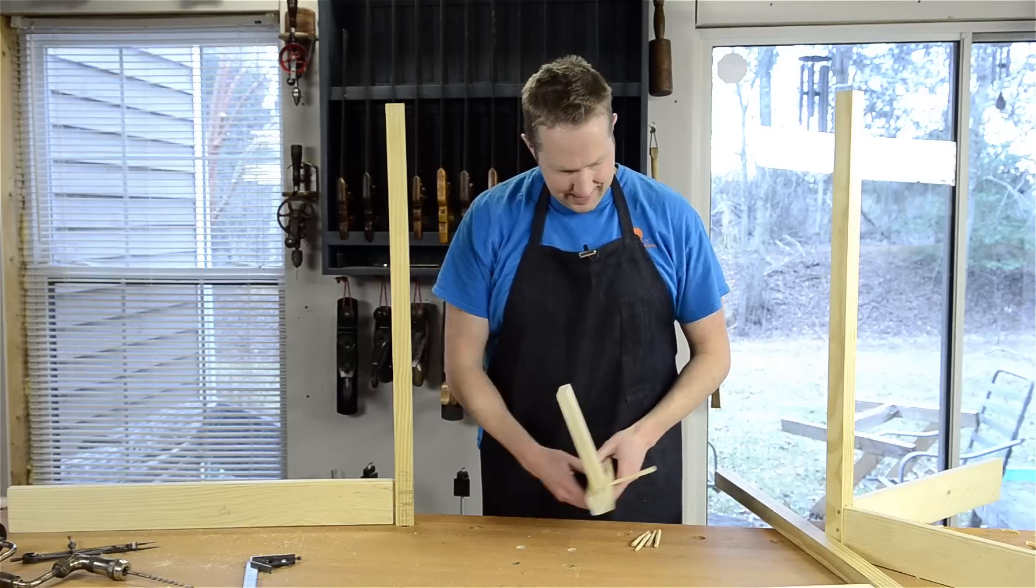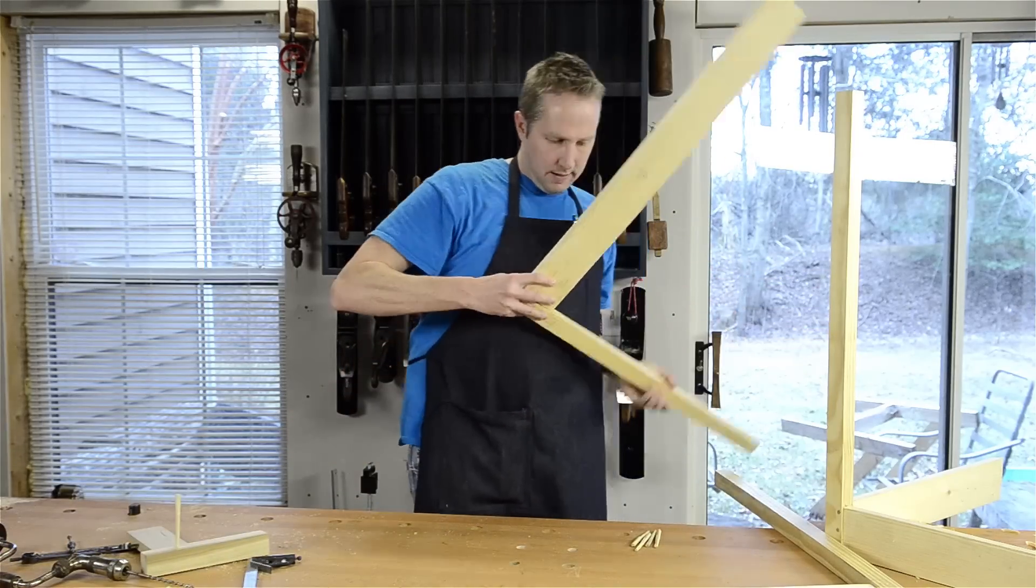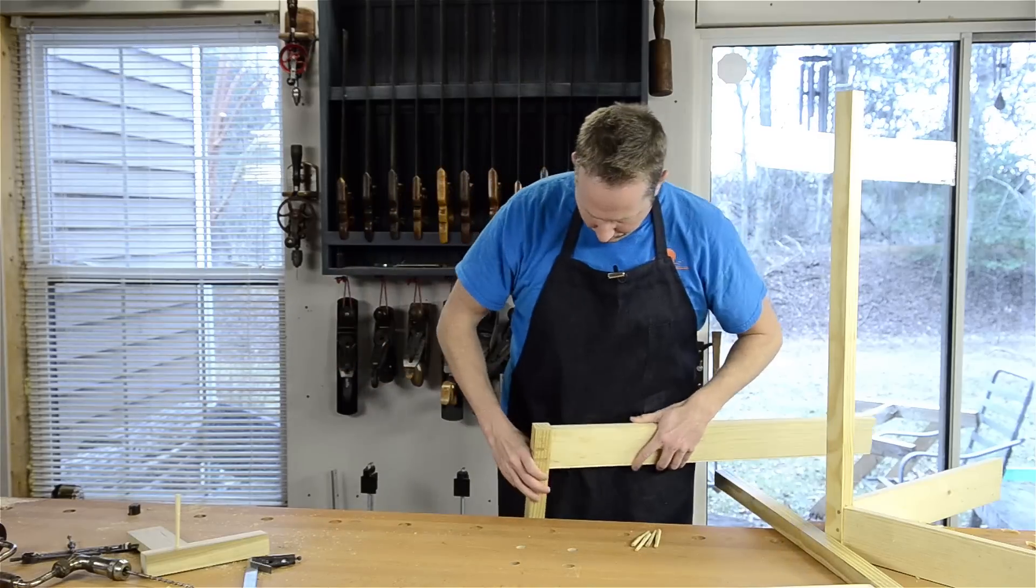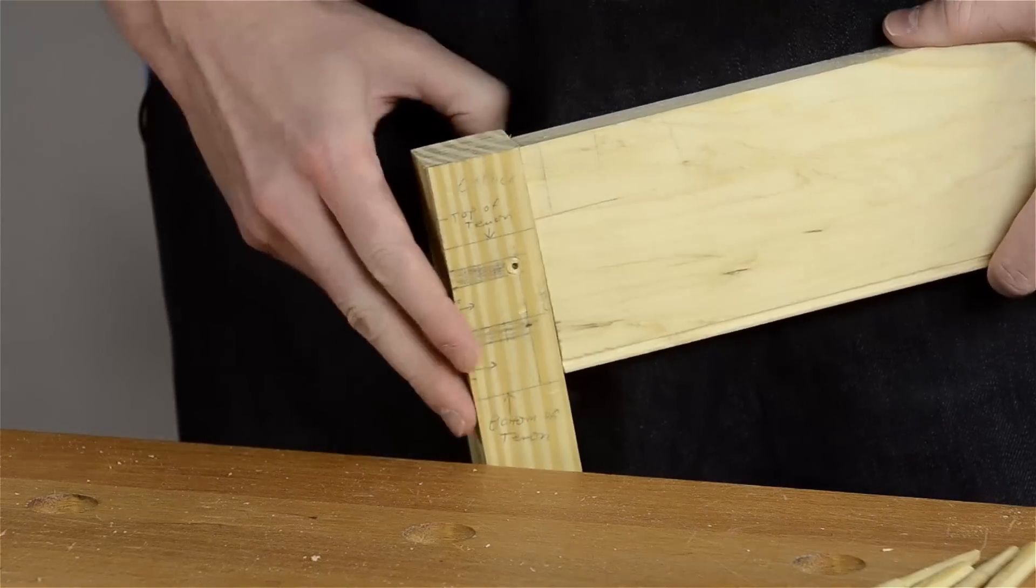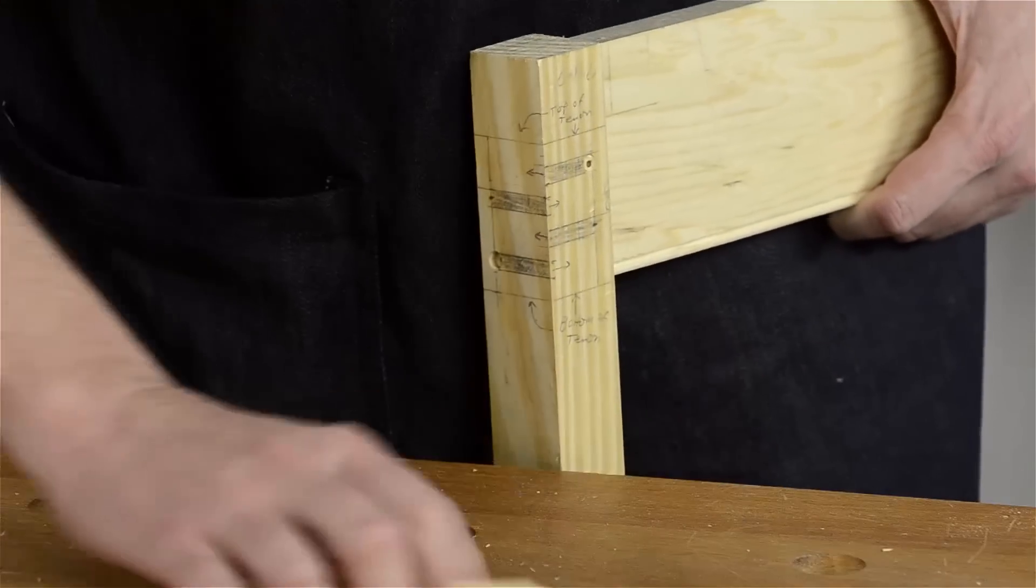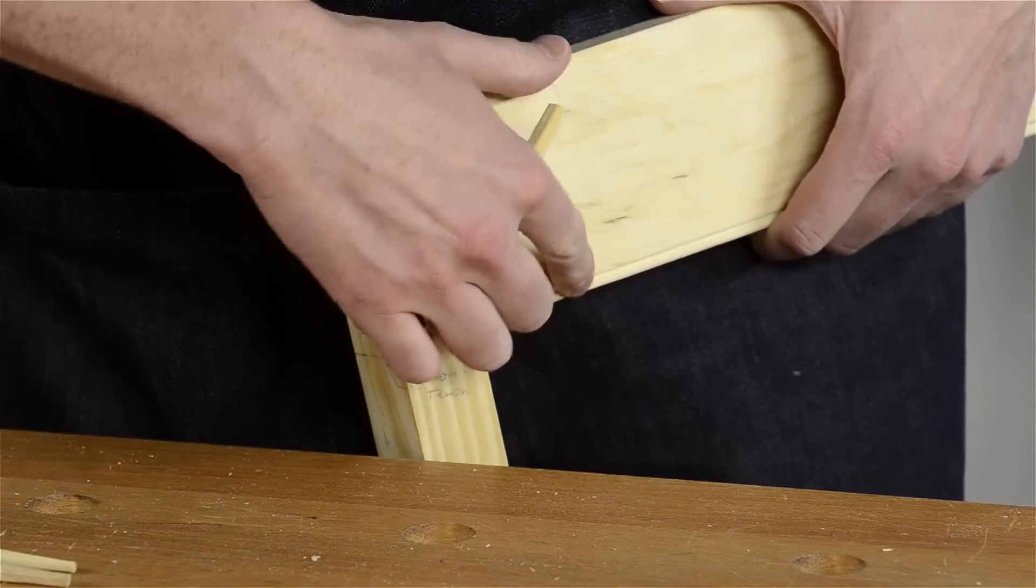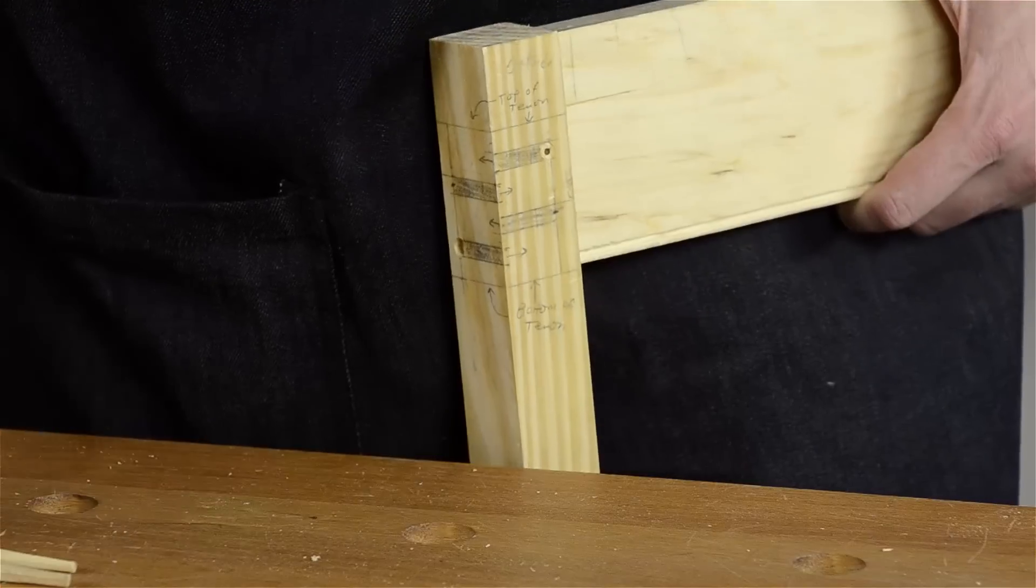I've got this part of our desk, the apron here and the leg, all ready to go. And I've drawn a little diagram on here so you can see how these pegs go in. Since we have a bigger apron here, I'm going to be using four of these pegs.